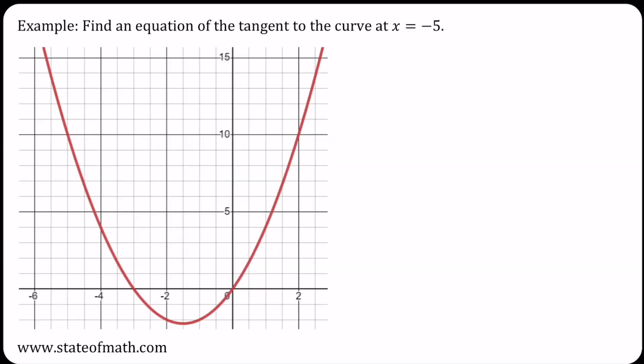In the second example, we have to find the equation of the tangent to the curve at x is negative 5. Going on the graph, when x is negative 5, y is 10. So the point is minus 5, 10.